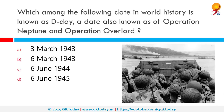Which date in world history is known as D-Day, also known as Operation Neptune and Operation Overlord? The correct answer is 6th June 1944. The Normandy landings were the landing operations on Tuesday 6th June 1944 of the Allied invasion of Normandy in Operation Overlord during World War II. Code named Operation Neptune and often referred to as D-Day, it was the largest seaborne invasion in history.